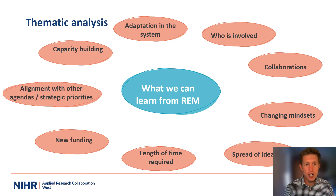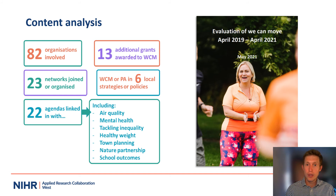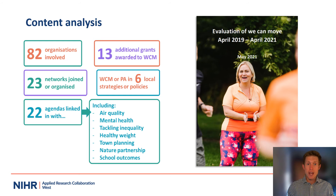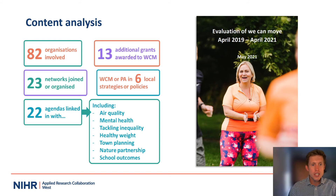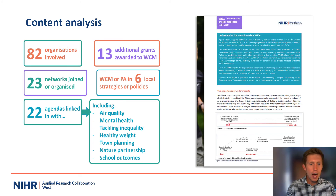As we also showed earlier, some of the ripple effect mapping outputs can be quantified through the use of a content analysis. These are some more examples from the results included within a project that we evaluated. This combination of findings — both the thematic ones and the numeric ones — can really help to satisfy a wide range of different stakeholders. If you want to look at how this was written up in a report, please see the evaluation of WeCanMove on the ArcWest website. We're sure there will be lots of other ways of reporting the findings from ripple effect mapping too.